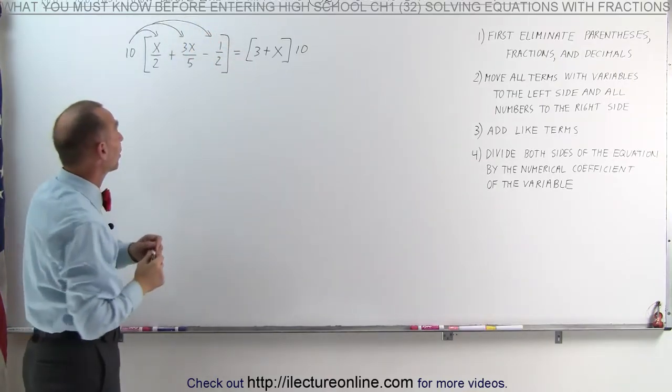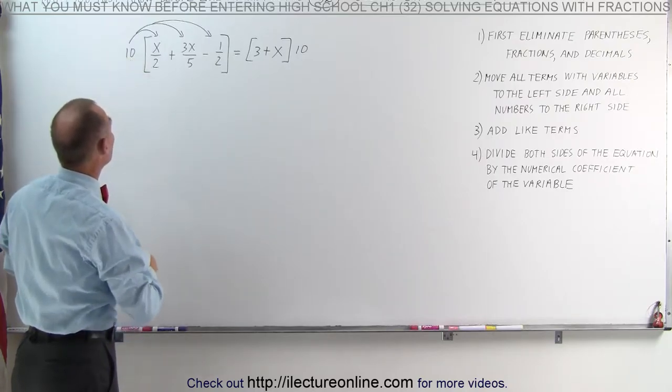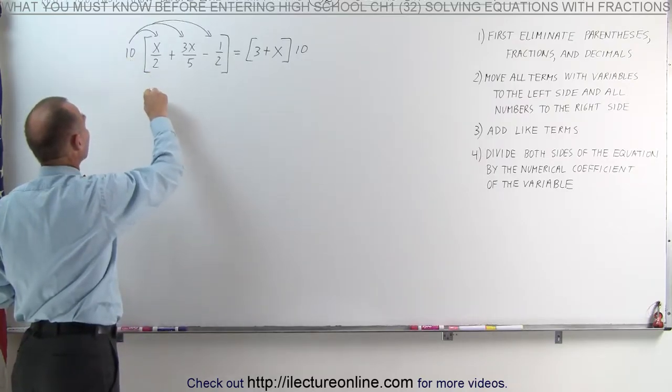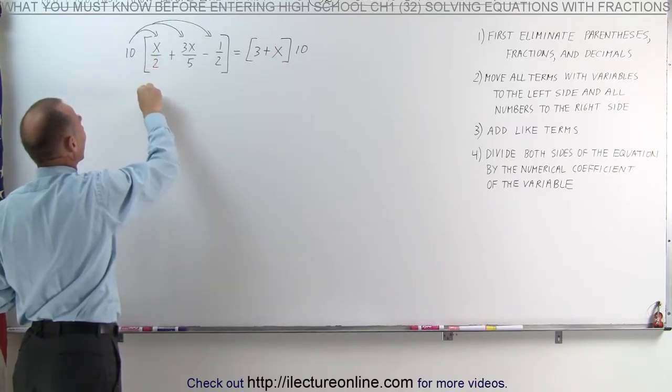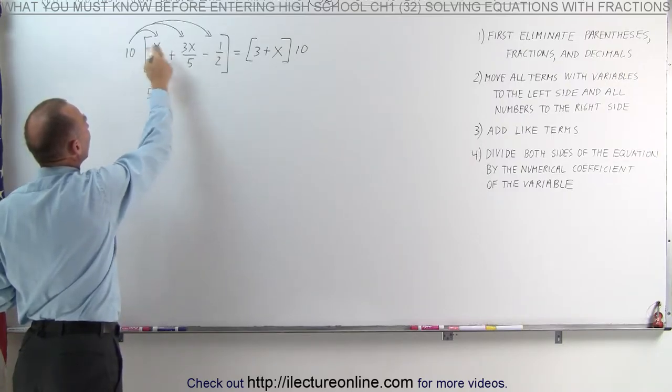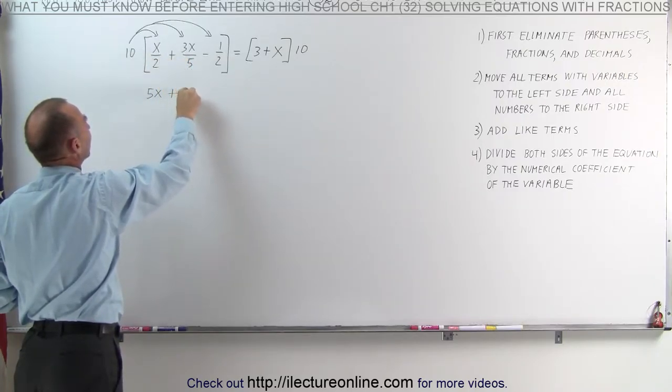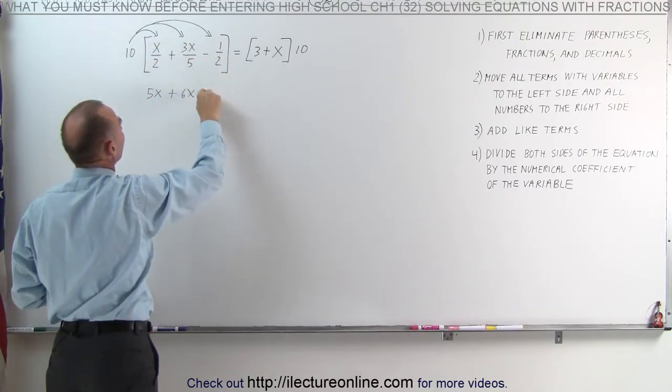The way to do that is to tell yourself the following: 2 goes into 10 five times, which means it's the same as 5 times x. So 10 divided by 2 is 5, and then we have 5 times x, which gives us 5x. 5 goes into 10 twice. 2 times 3x gives me 6x. And again, 2 goes into 10 five times. 5 times a negative 1 is a negative 5.